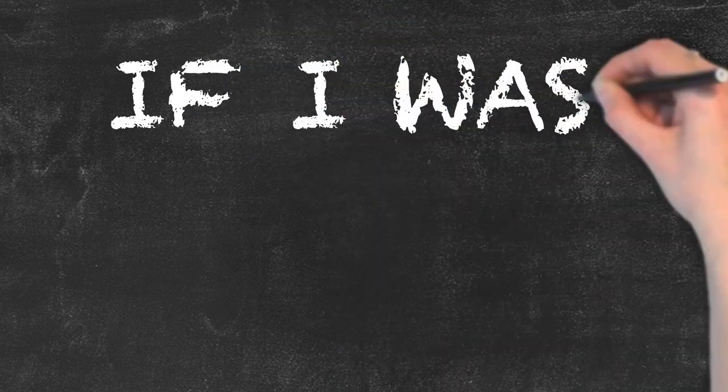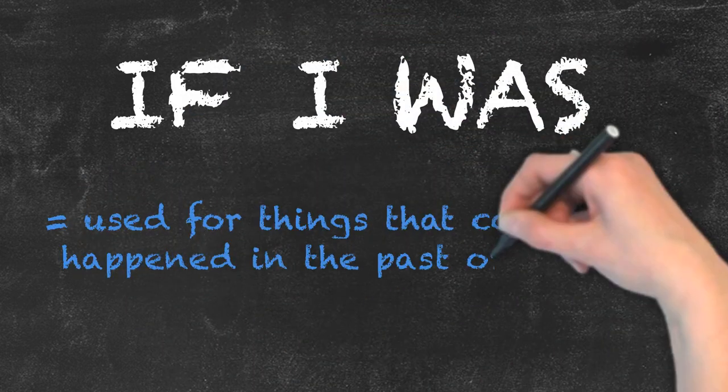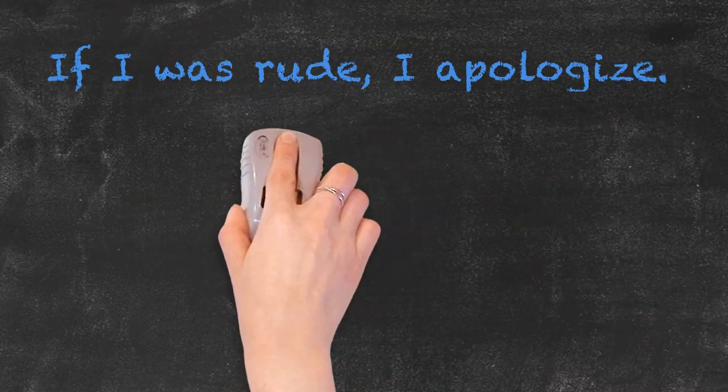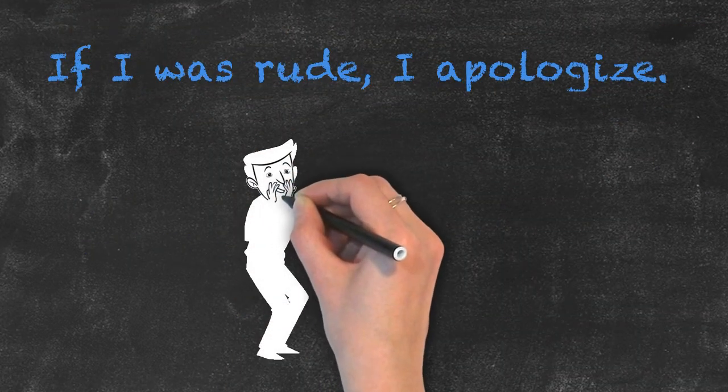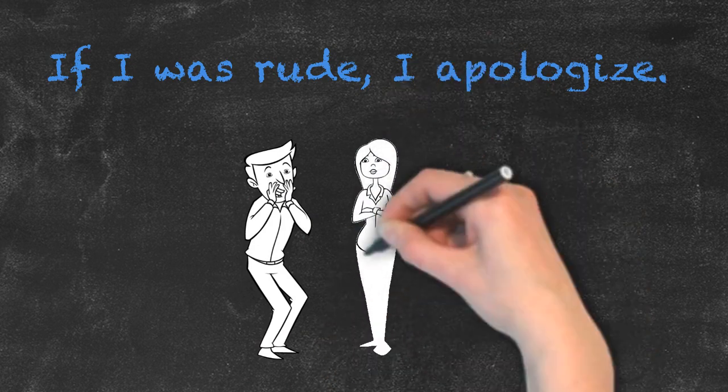The phrase if I was is used for things that could have happened in the past or now. For example, if I was rude, I apologize. The speaker thinks he or she might have said something rude and feels sorry for it.